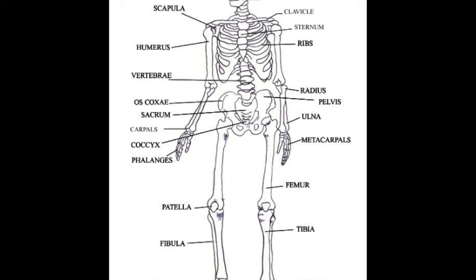If you wish to memorize it for an examination or test, there is no other way than to practice drawing it a couple of times. You can use shapes to make drawing the skeleton easier — for example, an oval for the skull, a rectangle for the chest or ribs, a triangle for the pelvis, and small cylinders for the hands and legs. Once you have drawn these outlines, sketch the detailed shapes of the various bones to make your drawing look proportionate.